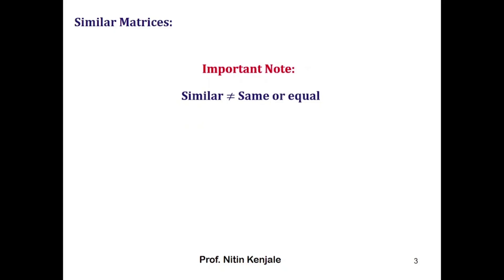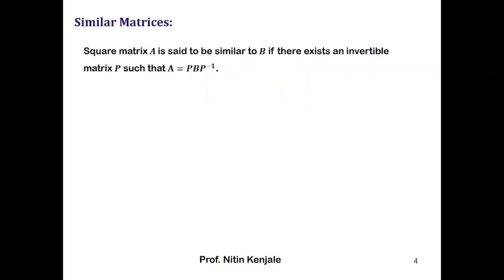First of all, one has to know what are similar matrices. Note that 'similar' doesn't mean same or equal. A square matrix A is said to be similar to matrix B if there exists an invertible matrix P such that A is equal to P B P-inverse. An invertible matrix means the matrix whose determinant is not equal to zero.